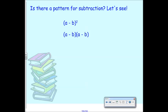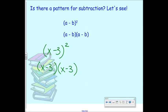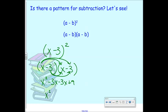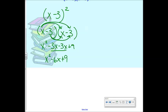Is there a pattern when you're subtracting? Let's look at x minus 3 squared, which is x minus 3 times x minus 3. Distributing: x times x is x squared, x times negative 3 is negative 3x, negative 3 times x is negative 3x, and negative 3 times negative 3 is positive 9. Combining like terms gives x squared minus 6x plus 9. The pattern: the last term is still the product of the two, and you add both — but the sign is now negative because of the subtraction.